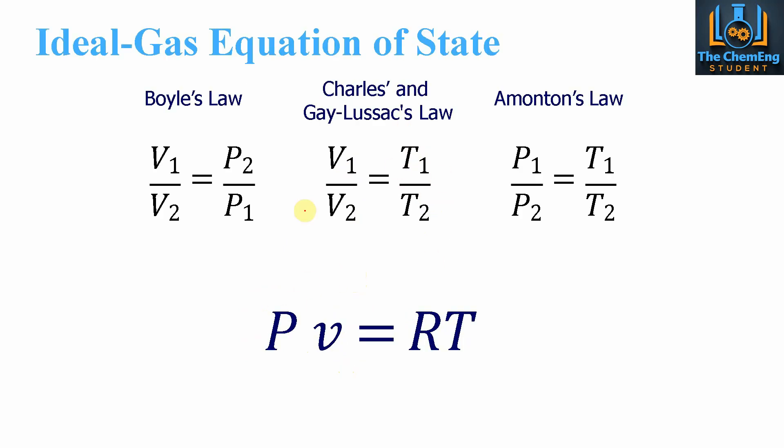So just as a summary, these are the three ideal gas equations of state based on this equation here. If we fix, for Boyle's Law, we fix the temperature. For Charles Law, we fix the pressure. And for Amonton's Law, we fix the specific volume. That's just a summary of our equations of state.